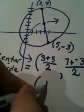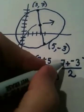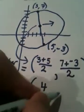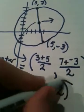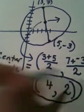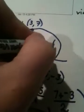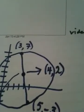8 divided by 2 is 4. Rather, 7 plus -3, 4 divided by 2 is 2. So this, the ordered pair (4, 2) is the center of my circle.